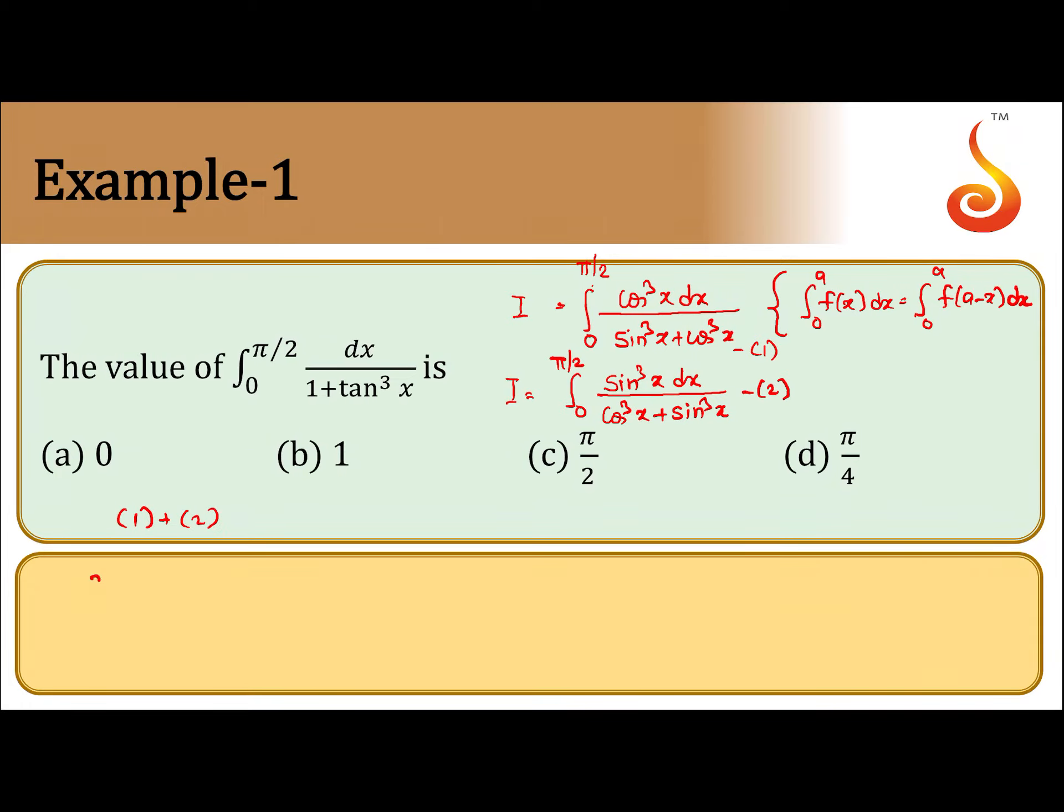Adding equation 1 and 2, we get 2I is equal to integral from 0 to pi by 2 of 1 dx, which is equal to pi by 2.